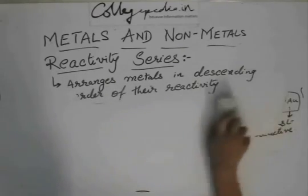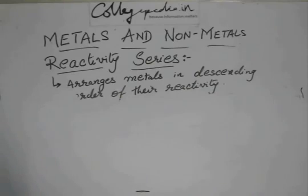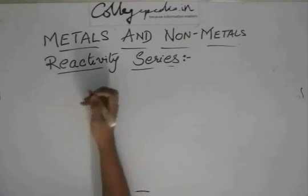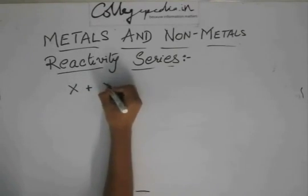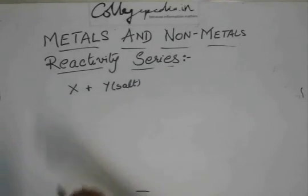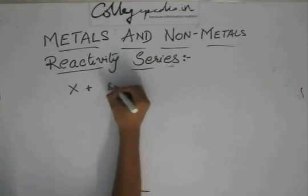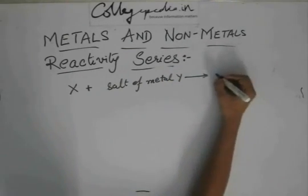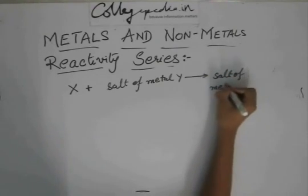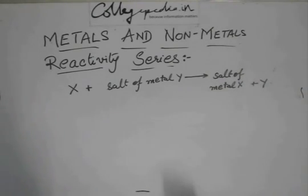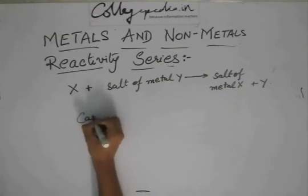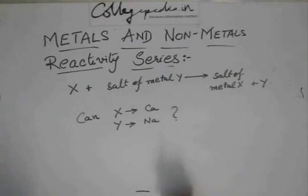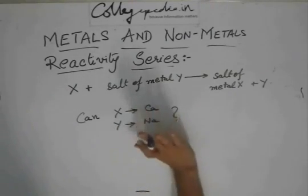You generally have questions like x + salt of metal y gives salt of metal x and the element or metal y. Can x be calcium and y be sodium? That is the question — is this combination of x and y possible for this reaction?